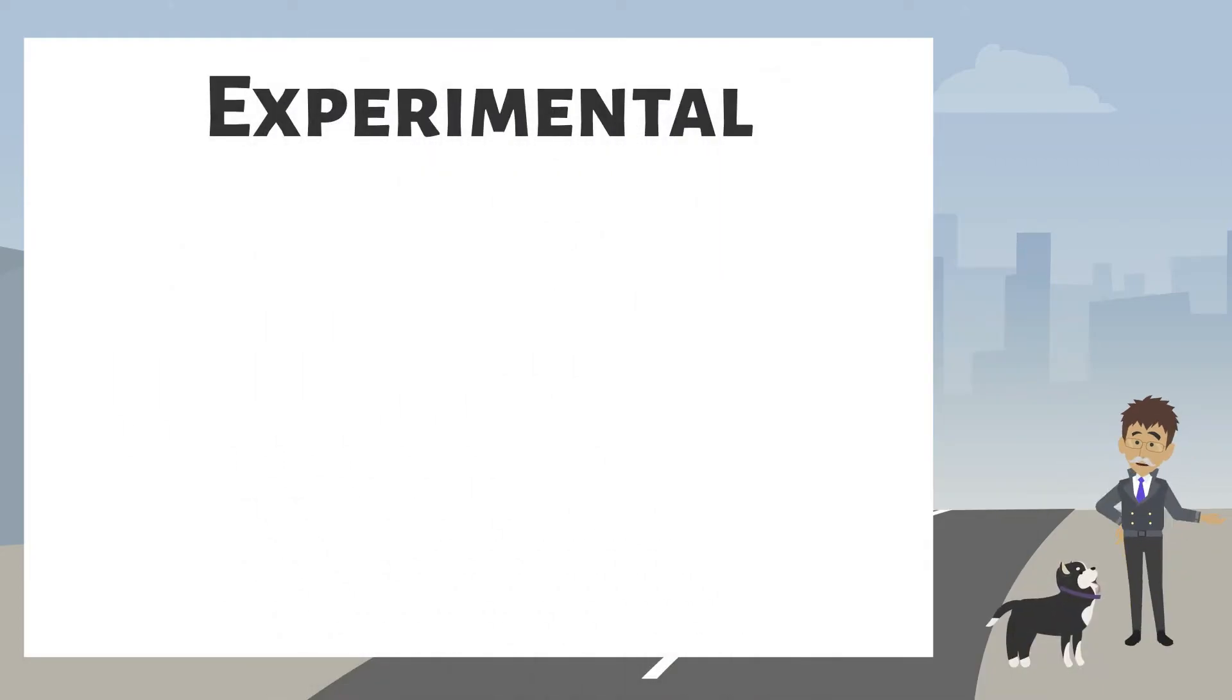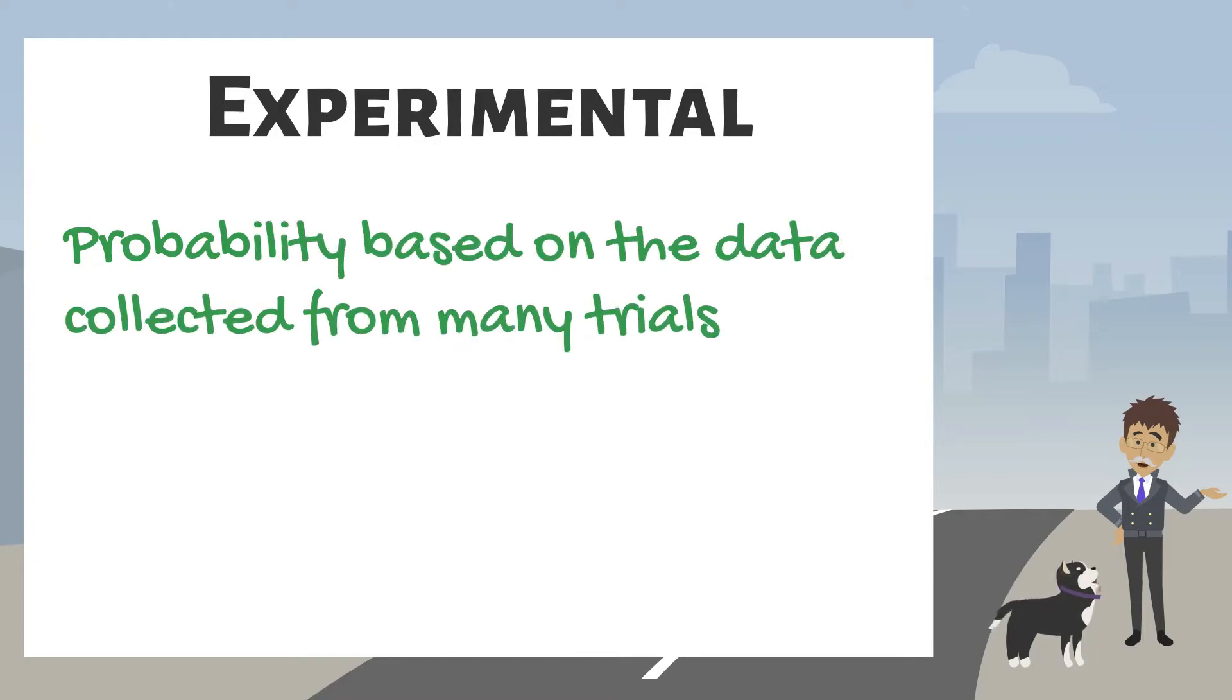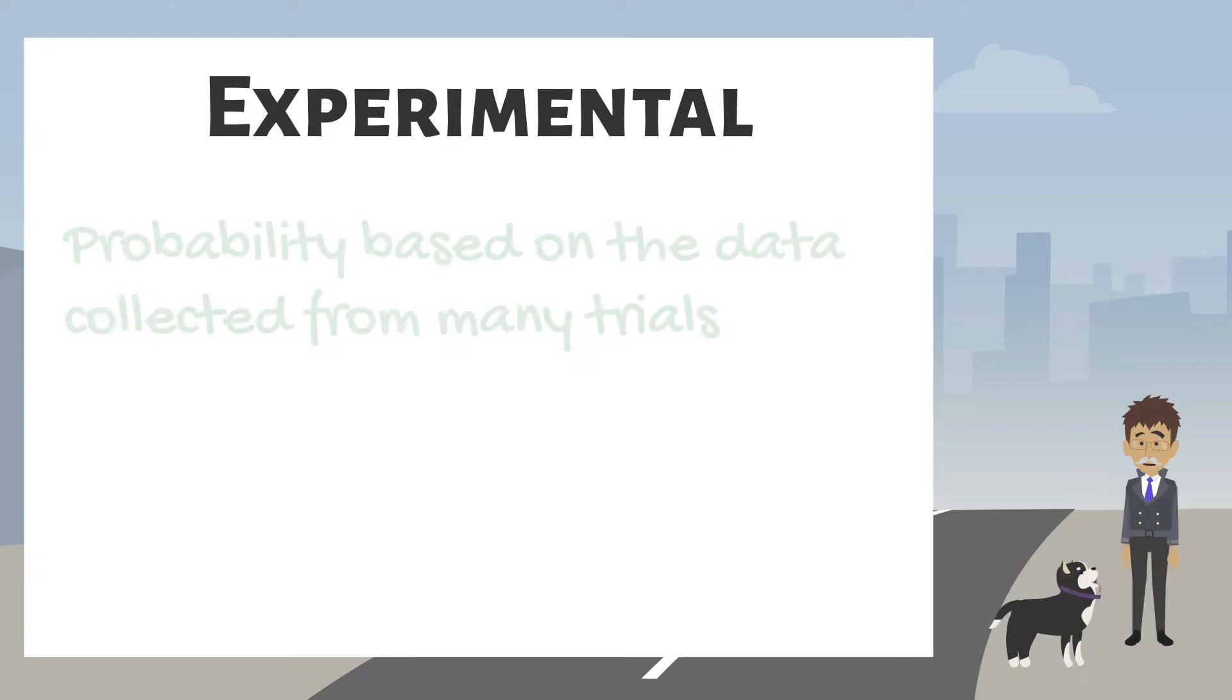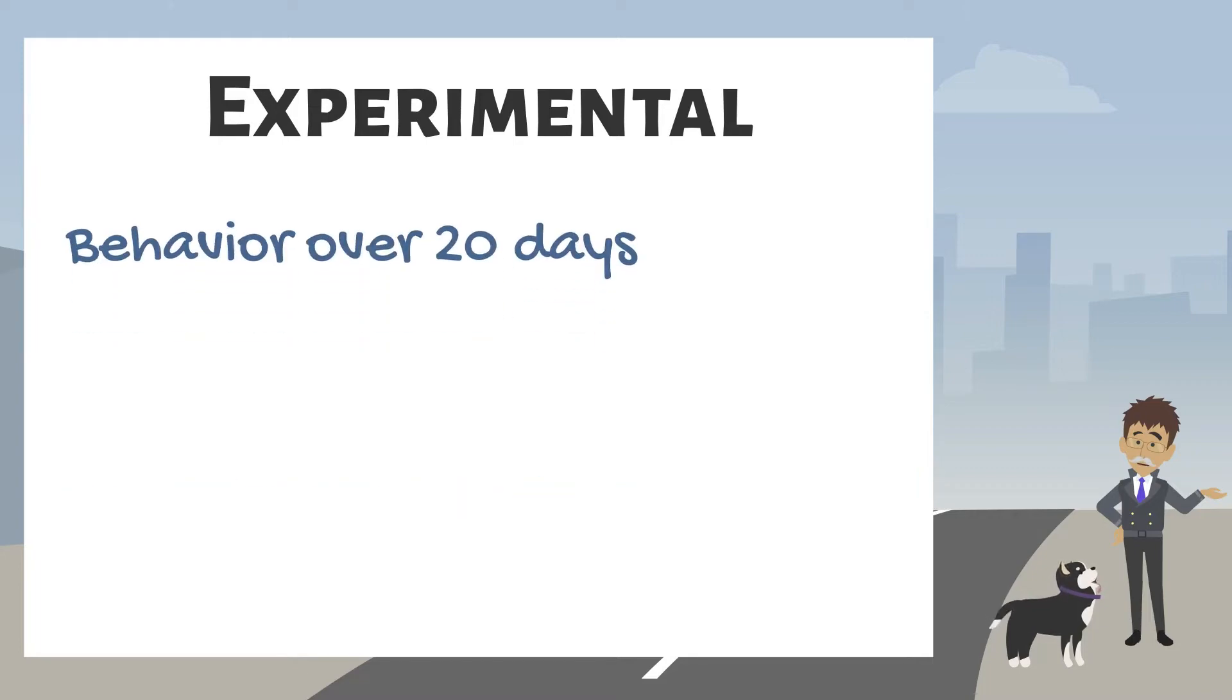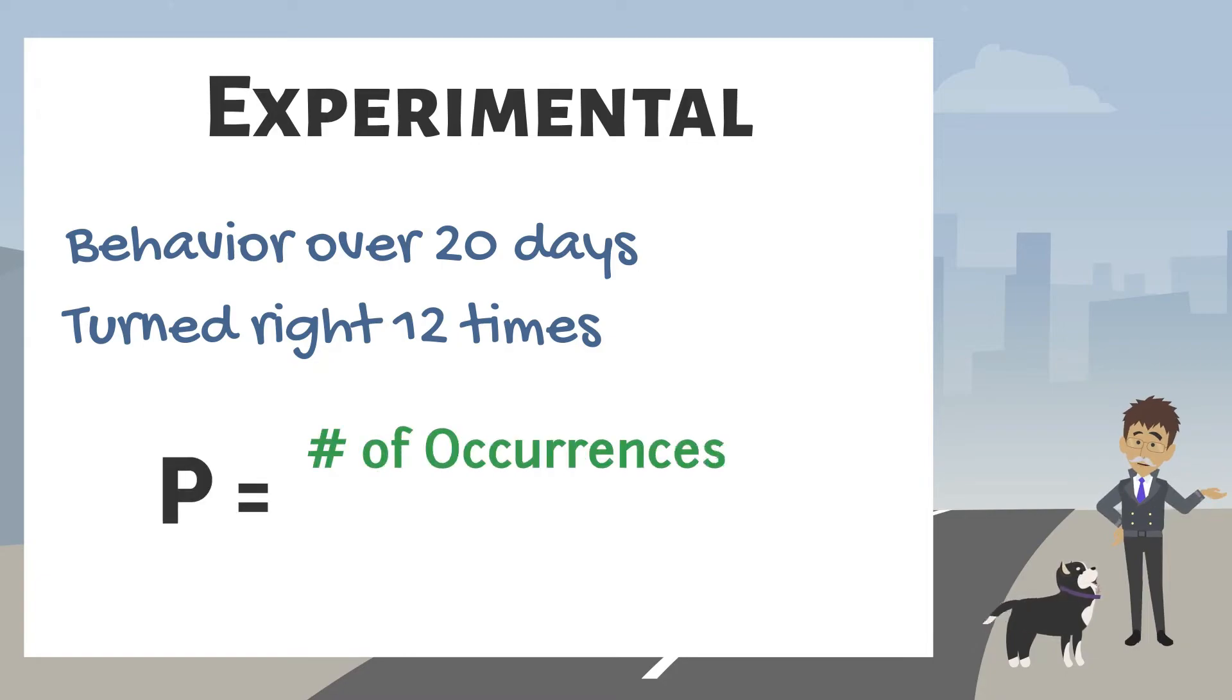experimental probability requires an experiment and is based on the results of that experiment. I recorded the direction we turned when we left home over the past 20 days. Random decided to turn right 12 days. We can calculate the experimental probability by creating a ratio between the number of times the event occurred and the total number of observations.